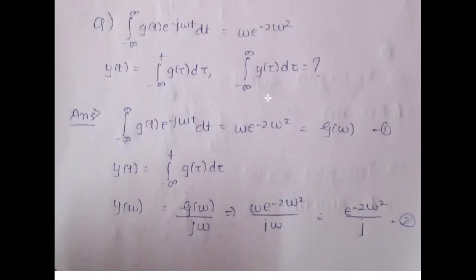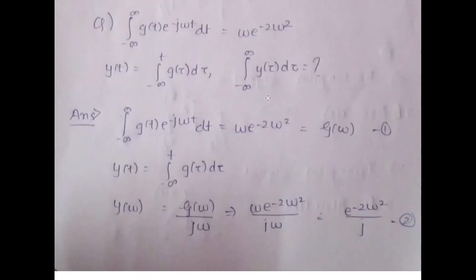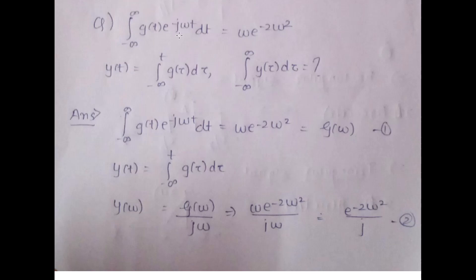We have a GATE exam numerical. The integral from minus infinity to infinity of g(t) e^(−jωt) dt is given as ω · e^(−2ω²). y(t) is defined as the integral from minus infinity to t of g(τ) dτ. We need to find the integral from minus infinity to infinity of y(τ) dτ. The integral from minus infinity to infinity of g(t) e^(−jωt) dt is nothing but G(ω) itself, which equals ω · e^(−2ω²) as given.